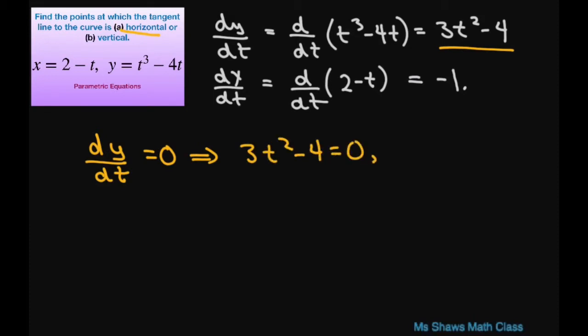Therefore, solving for t, you get 3t squared equals 4. t squared equals 4 thirds. So t equals plus or minus the square root of 4 is 2 divided by square root of 3.